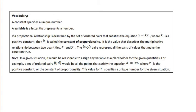At this point, it's important to review a couple of vocabulary terms. A constant specifies a unique number — that's why when we call it the constant of proportionality, we're talking about a number that shows the proportional relationship between the two columns. A variable is a letter that represents a number. In a proportional relationship described by ordered pairs of x and y, k is our constant of proportionality, and the equation y equals k times x shows k as the constant of proportionality.